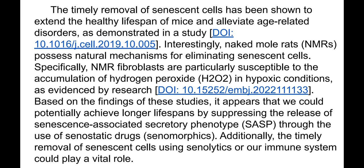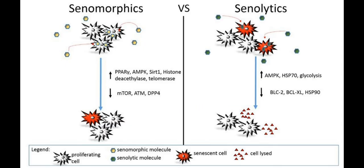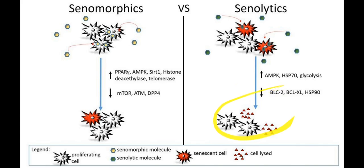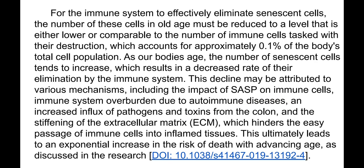Based on these findings, we could potentially achieve longer lifespans by suppressing the release of SASP through the use of senostatic or senomorphic drugs. Additionally, the timely removal of senescent cells using senolytics or our immune system could play a vital role. We can use senomorphics to reduce the concentration of SASP and pro-inflammatory molecules, or reduce the number of senescent cells. For the immune system to effectively eliminate senescent cells, their number must be reduced to a compatible level.